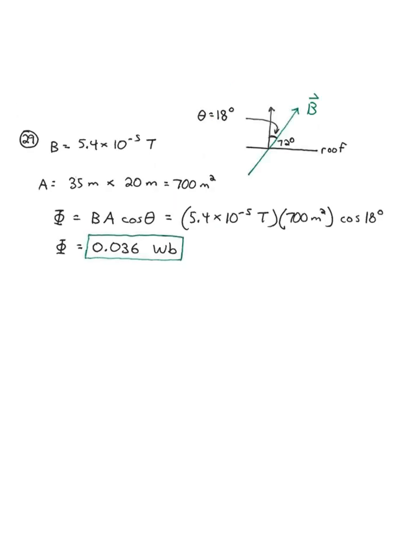Number 29. At one location, Earth's magnetic field has a magnitude of 5.4 times 10 to the negative 5 teslas with an inclination of 72 degrees to the horizontal. Find the magnetic flux through the horizontal rectangular roof measuring 35 meters by 20 meters.